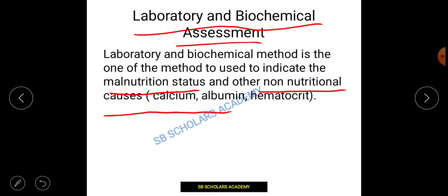Causes like calcium, albumin, or hematocrit are tested through regular check-ups. When you take blood samples, there are assessments of your hemoglobin level. In your urine, infections or other problems can also be assessed. Basically, the laboratory method and biochemical assessment involves testing chemicals from the lab — scientists and laboratorians test blood samples and urine samples.